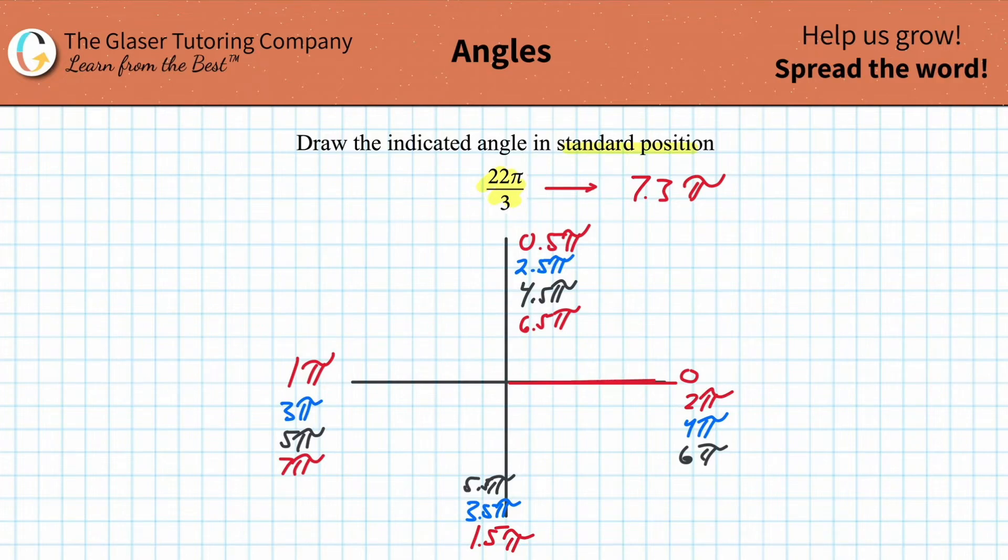So in other words, what that means is this. Watch. I'm going to draw another little line here. And what we're going to do is we're going to rotate 7.3 pi radians all the way around. We start at 0.